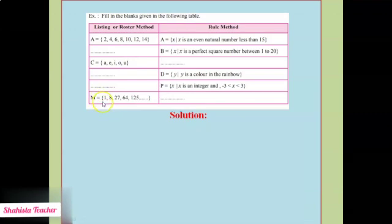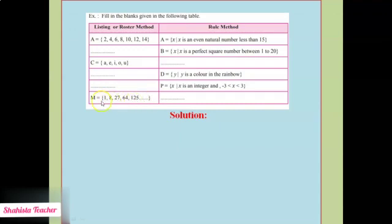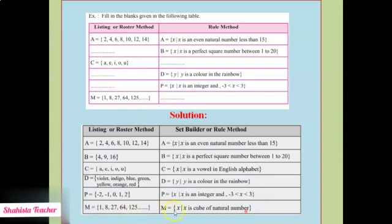Now the last one. M = {1, 8, 27, 64, 125}. All these numbers are cubes — a set of cubes. So here we will write the solution: M = {x such that x is a cube of a natural number}. Because: 1 cubed is 1, 2 cubed is 8, 3 cubed is 27, 4 cubed is 64, 5 cubed is 125.